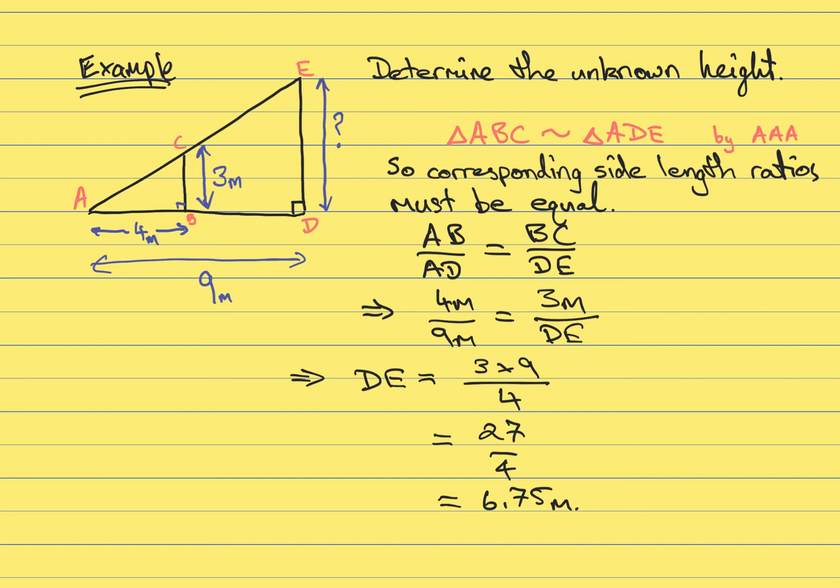So here we can see that we've found the unknown height, the length of the side DE, using similar triangles, similarity, and the corresponding side length ratios.